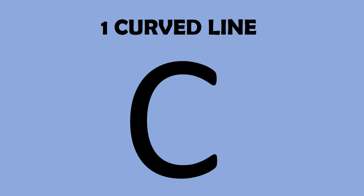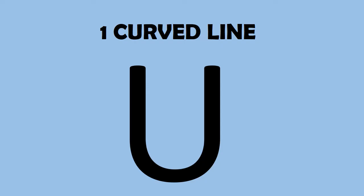This is C. How many straight lines do we use to write C? Oh wait, we don't use any straight lines. We use a curved line. This is U. Students, you tell me, do we use a straight line or curved line to write a U? Yes, we use a curved line.